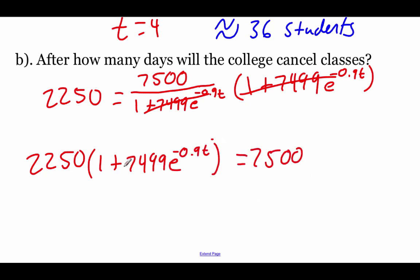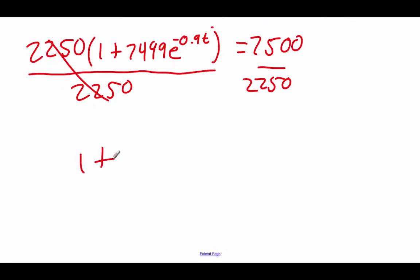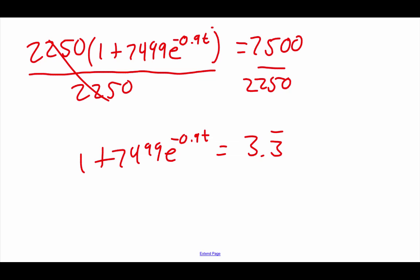Now that we've got that denominator multiplied over, I'm actually going to divide this 2,250 over to the right-hand side. If we do that, we get 1 plus 7499 e to the negative 0.9 t equals 3.3 repeating. Now we're trying to solve for this t value. So what that means is we're going to end up moving everything over to the other side. So I'm going to start by subtracting this 1 over. So we've got 7,499 e to the negative 0.9 t equals 2.3 repeating.